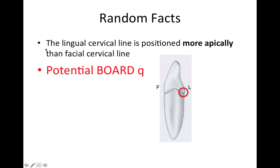Here's a topic that's been seen as a potential board question. We're going to look at the CEJ right here. The lingual cervical line is positioned more apically than the facial cervical line. Remember, coronally is towards the crown and apically is towards the root. So on the lingual, the CEJ is going to be positioned a little bit more towards the root than on the facial.